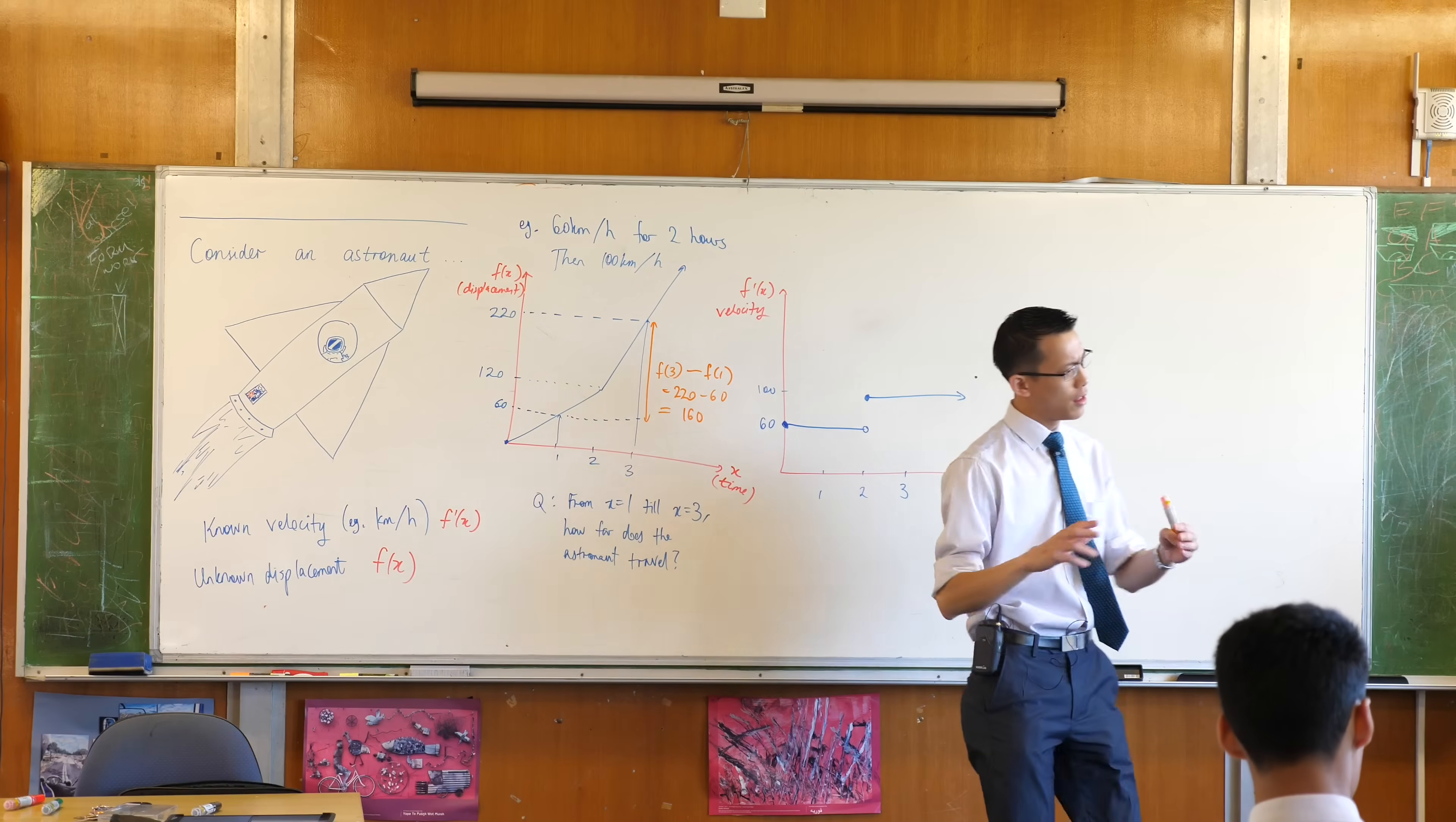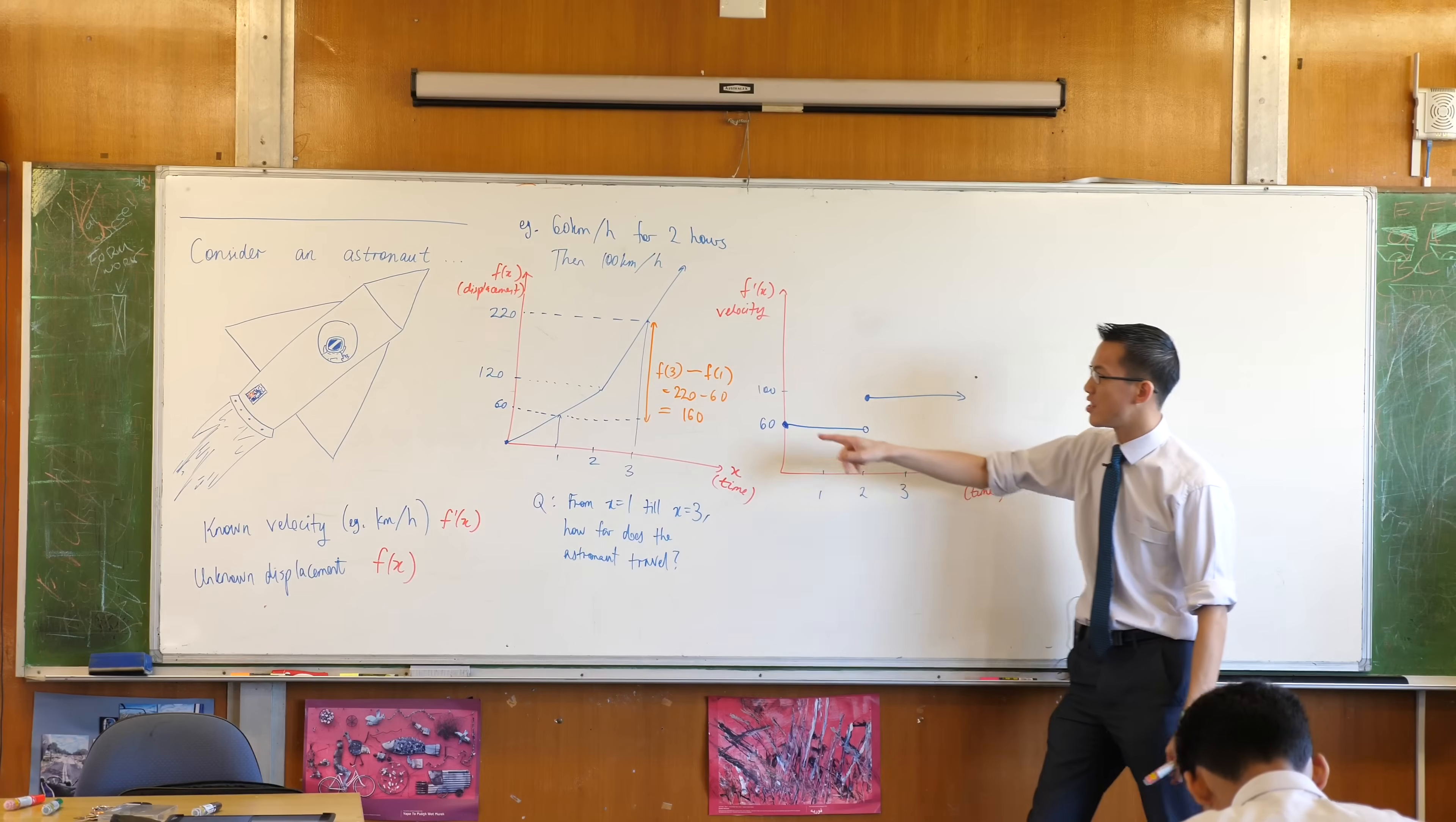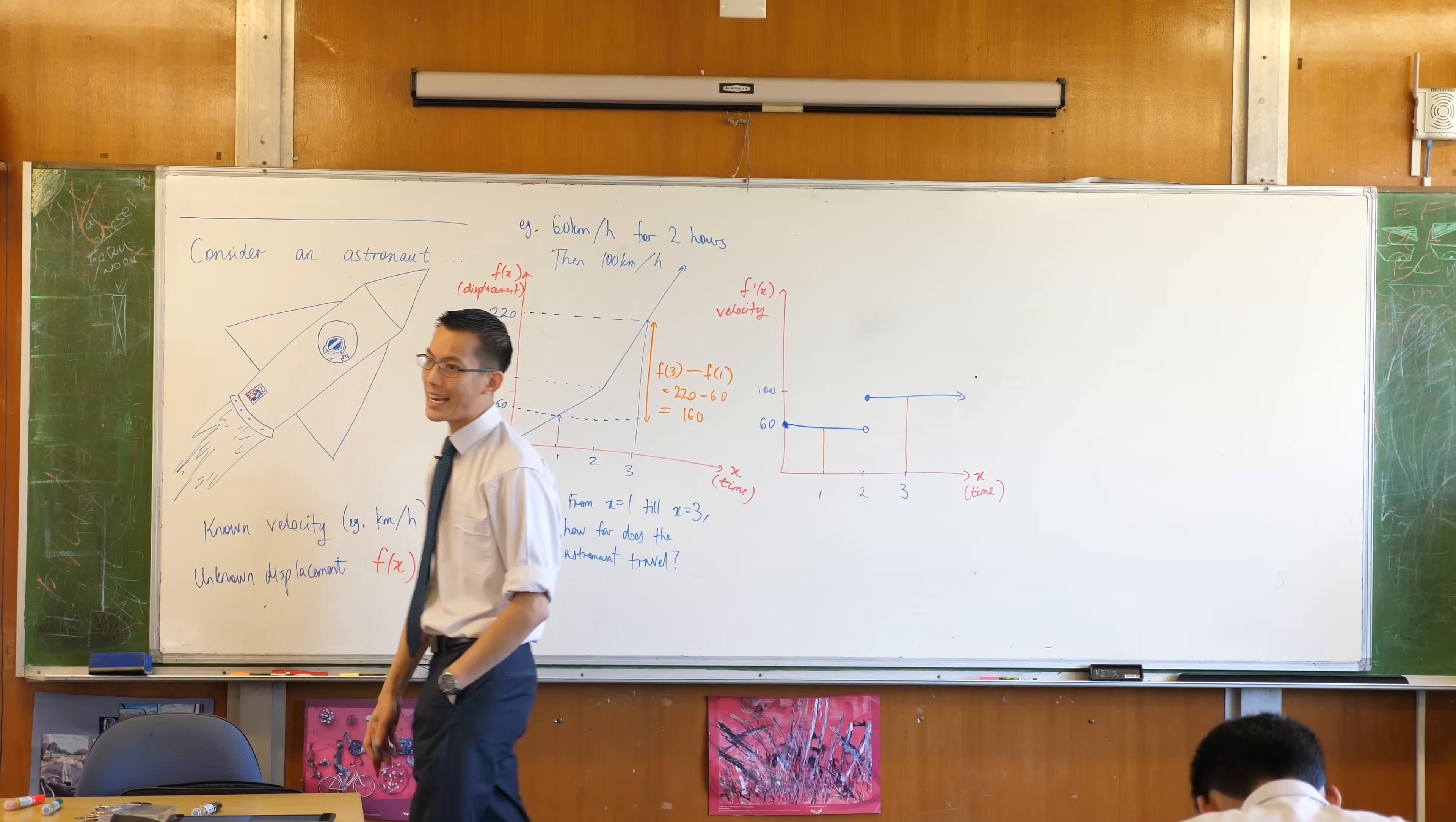My question is: the way we solve this problem of how far does the astronaut travel - what does it look like on this diagram? We had to find out where you end, find out where you start, and then take the difference. But in this diagram, from time one to time three, where is the number 160? Where is the answer hiding?